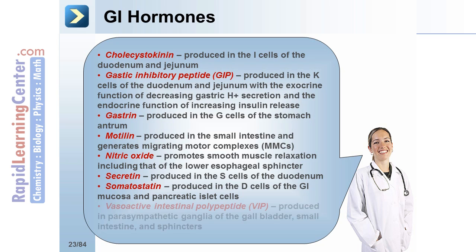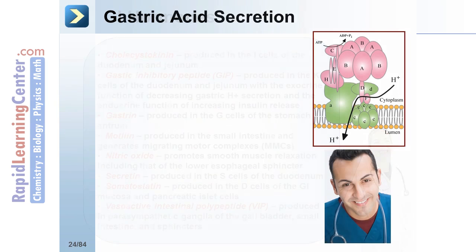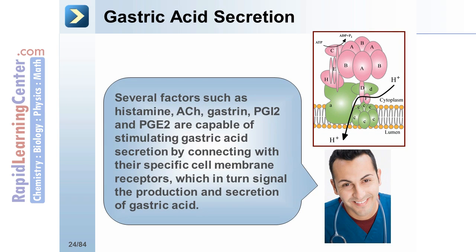And finally, vasoactive intestinal polypeptide, or VIP, is produced in parasympathetic ganglia of the gallbladder, small intestine, and sphincters. Several factors such as histamine, acetylcholine, gastrin, PGI2, and PGE2 are capable of stimulating gastric acid secretion by connecting with their specific cell membrane receptors, which in turn signal the production and secretion of gastric acid.